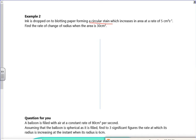Okay, so I stopped it on 7 minutes just because I wouldn't get through this. So it says ink is dropped onto a blotting paper forming a circular stain which increases in area at a rate of 5 cm² per minute.